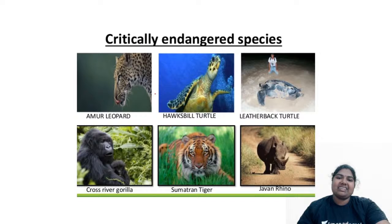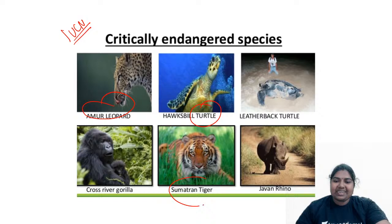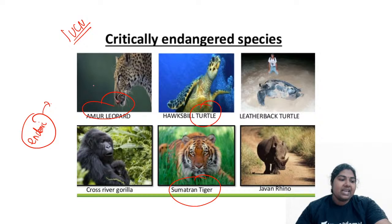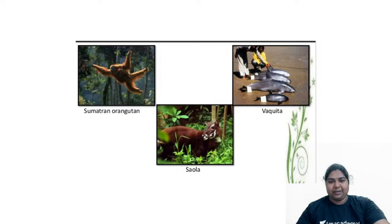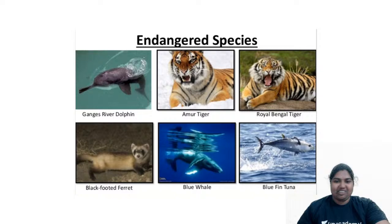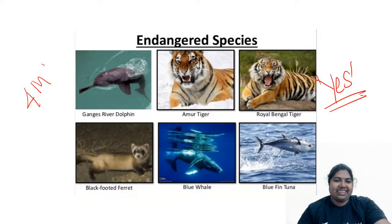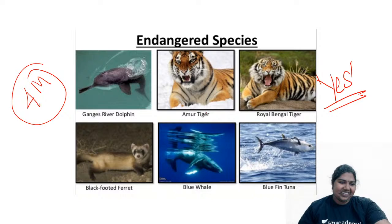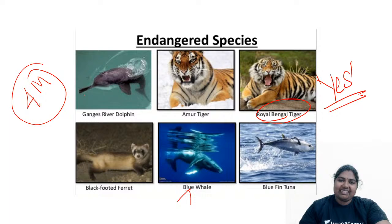The IUCN has already announced critically endangered species including the amur leopard, turtles, and Sumatran tiger. Other critically endangered species include the Sumatran orangutan and swallow. You should study all these names — yes, a big yes — because you can get four marks just for knowing these species names.